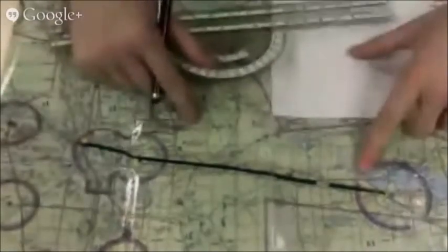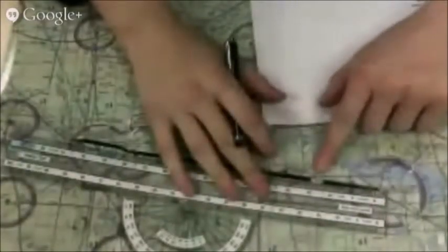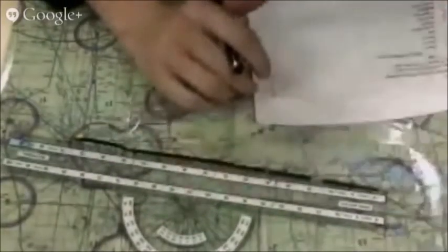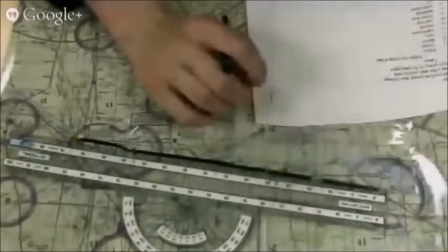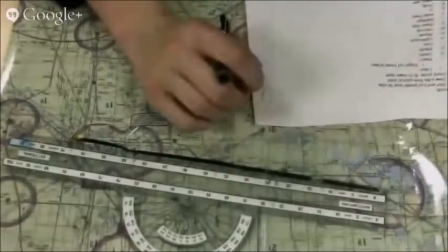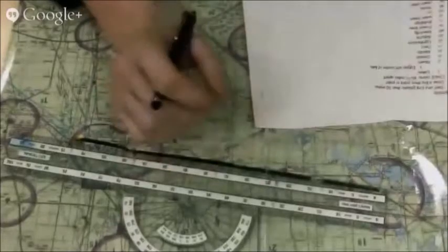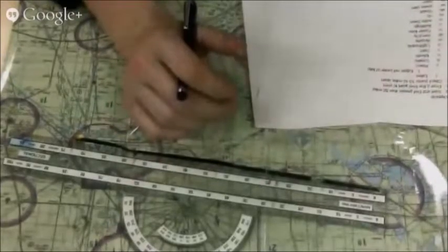After you've finished drawing out your line, you then want to measure 10 to 15 miles for a checkpoint. Good checkpoints by the way are lakes, rivers, creeks, islands, dams, lighthouses, and of course towns and other easy visible things.